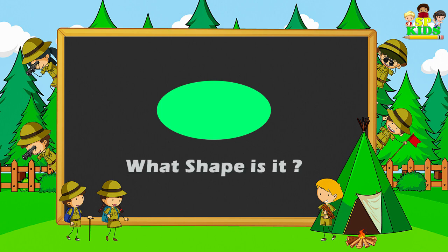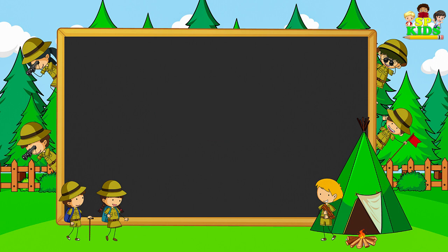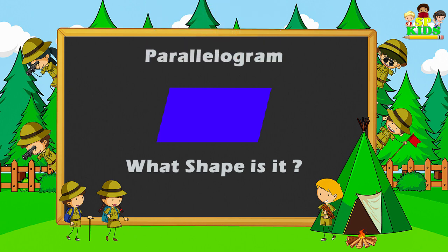What shape is it? Ellipse. What shape is it? Parallelogram.